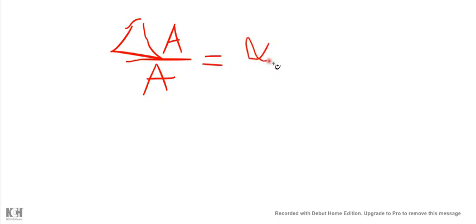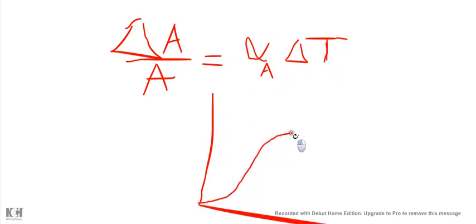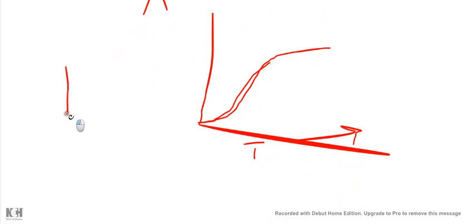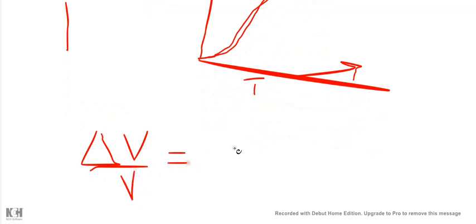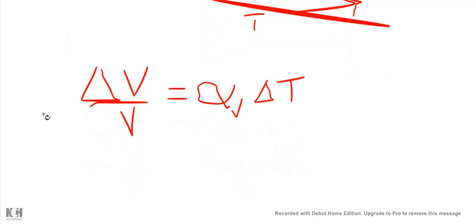Now let's define the area expansion. The area expansion is equal to the coefficient of area expansion into delta T. Volume expansion is equal to the coefficient of volume expansion into the temperature difference.